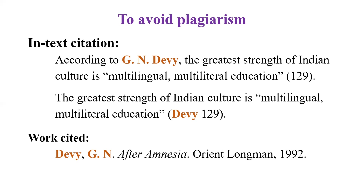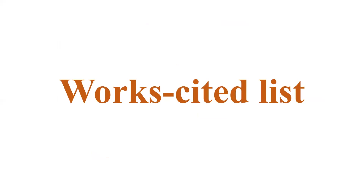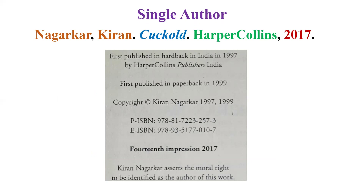In the works cited list, you look up alphabetically — say Devi. The entry would be: Devi, G.N. followed by the name of the work, then publisher's name Orian Longman, and year of publication 1992. There is a method to arranging these details, and that's what we are going to look at today. In this class we'll cover the works cited list; tomorrow we'll look at in-text citation.